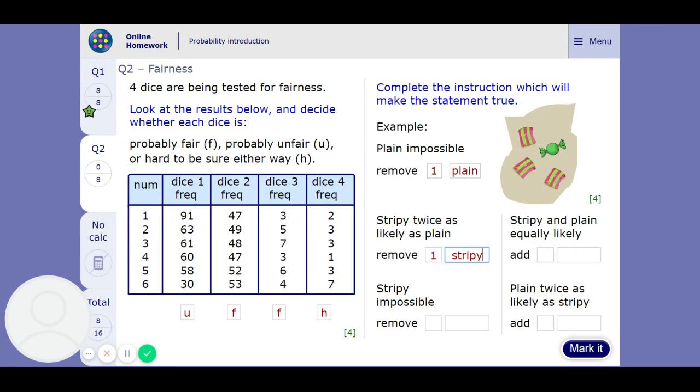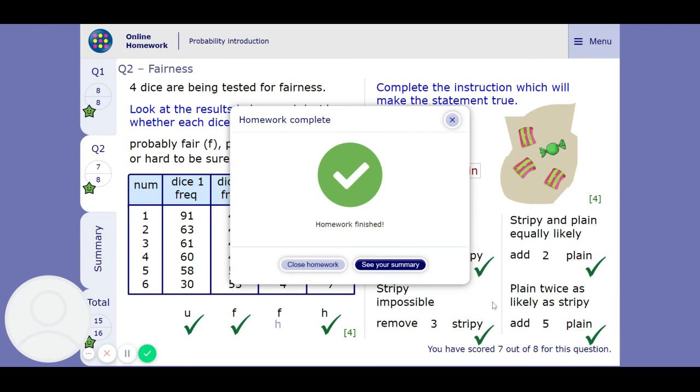Stripy and plain will be equally likely. Well, if I'm going to add something, I've got to make them equal numbers. I'm going to have to add two plain. It would be impossible. Well, I've got to remove all the stripy then. I've got to remove all three stripy. And plain twice as likely as stripy. Well, I've got to add, and I've got to make it up to six plain. I'm going to have to add five plain. Great, we've got that right.